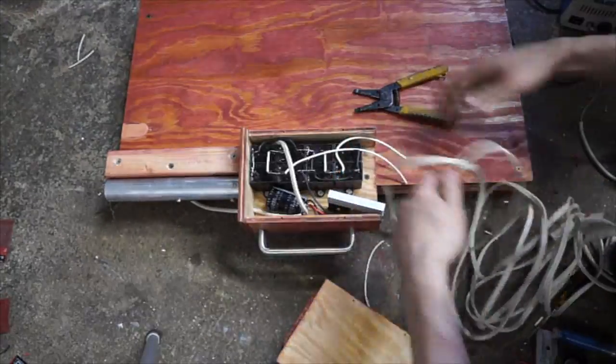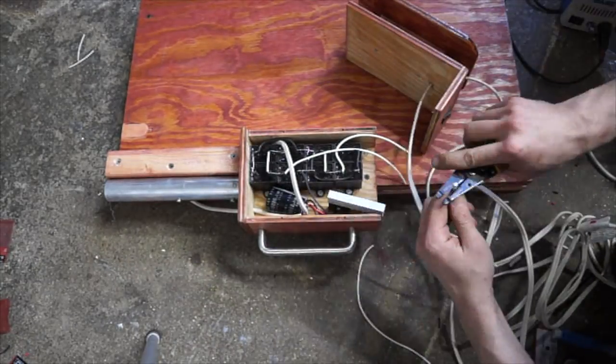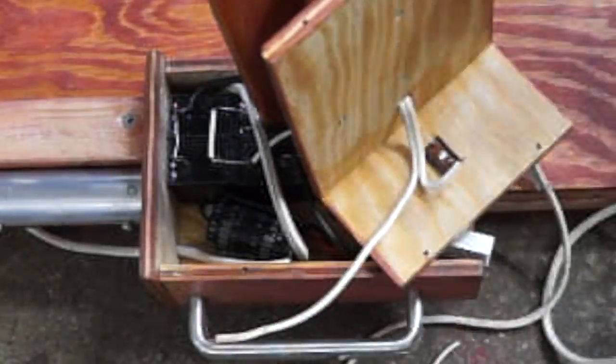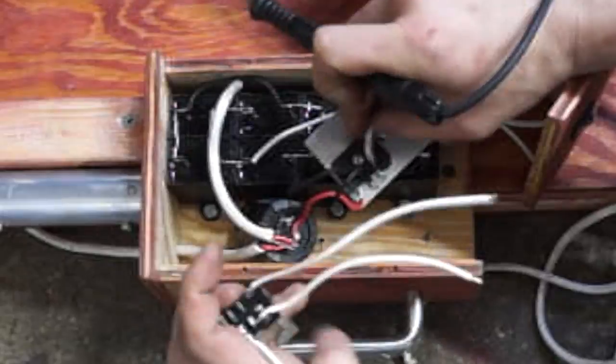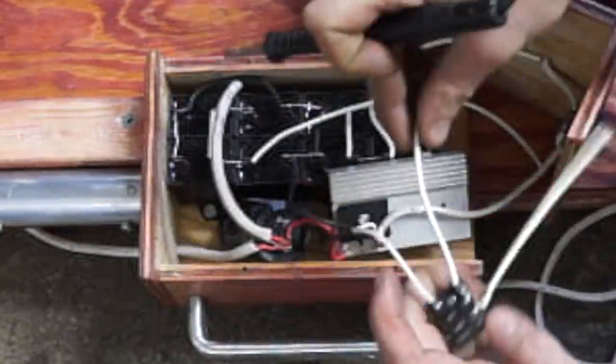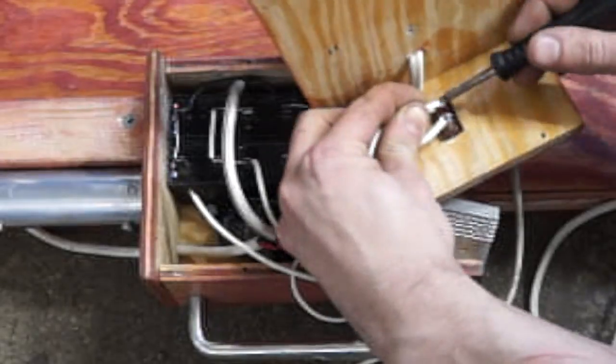The power cord is then inserted through the holes we created earlier. Both wires are stripped back and tinned with solder. One power cord wire is soldered to the common terminal of the switch. The other wire is soldered to the remaining lead of the rectifier. Then the pre-wired leads of the relay are connected to the switch.